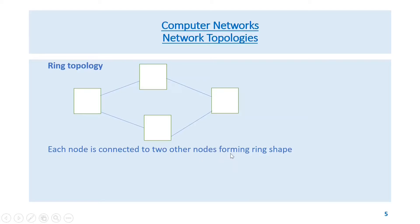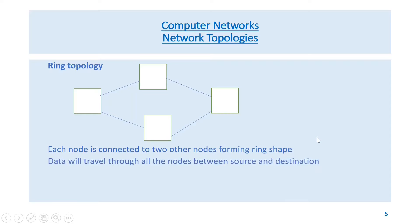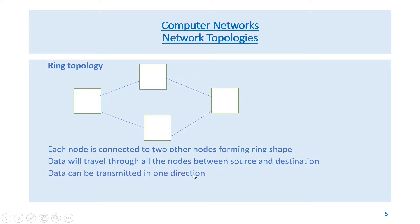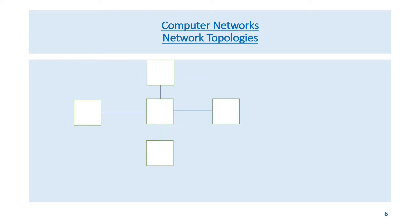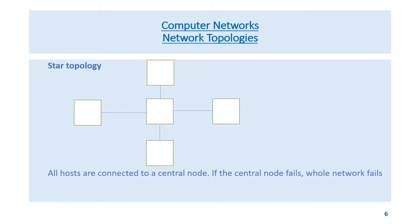In ring topology, each node is connected to two other nodes forming a ring shape. Data travels through all the nodes between source and destination. Data can be transmitted in one direction. If one node fails, the whole ring fails.